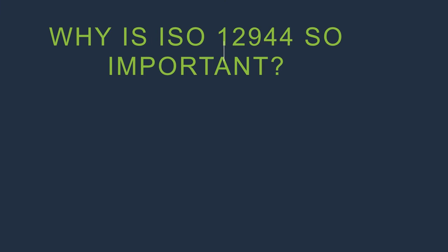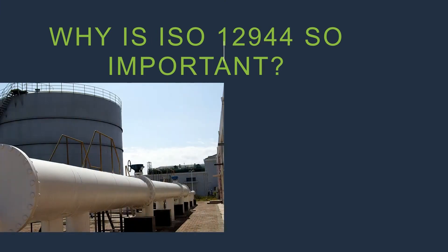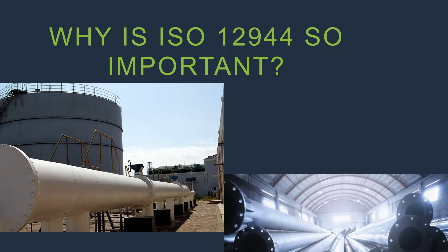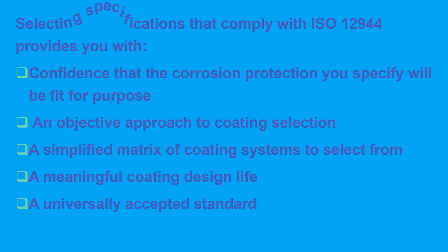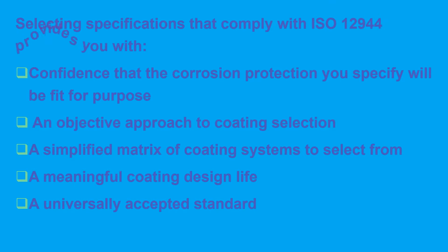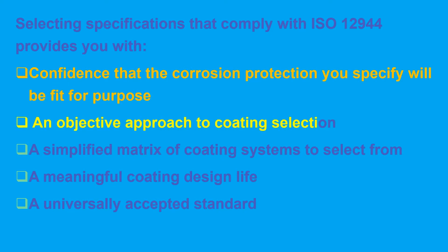ISO 12944 is intended to assist engineers and corrosion experts in adopting best practices in corrosion protection of steel structures at new construction. ISO 12944 is progressively superseding regional standards to become a truly global benchmark in corrosion protection. Selecting specifications that comply with ISO 12944 provides confidence that the corrosion protection specified will be fit for purpose — offering an objective approach to coating selection, a simplified matrix of coating systems to select from, a meaningful coating design life, and a universally accepted standard. Understanding your ISO environment helps tailor specifications, ensuring coatings are not under or over specified, avoiding unnecessary costs.